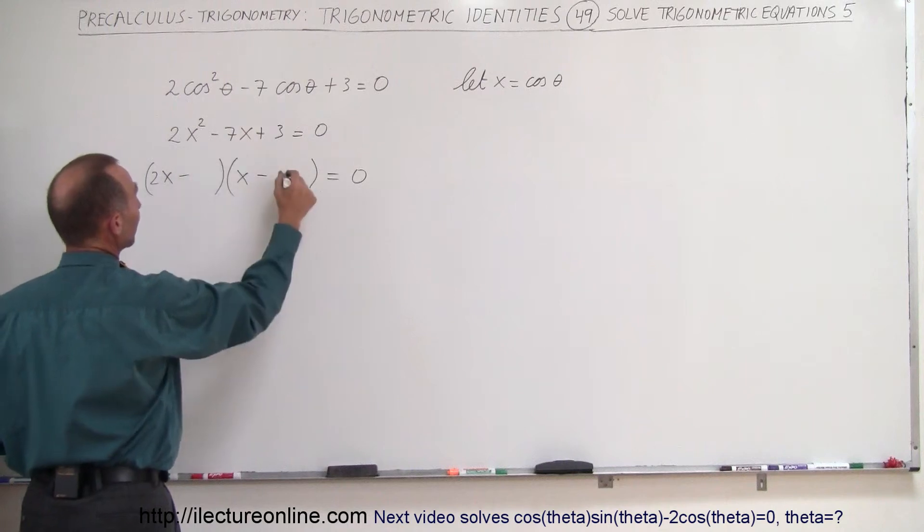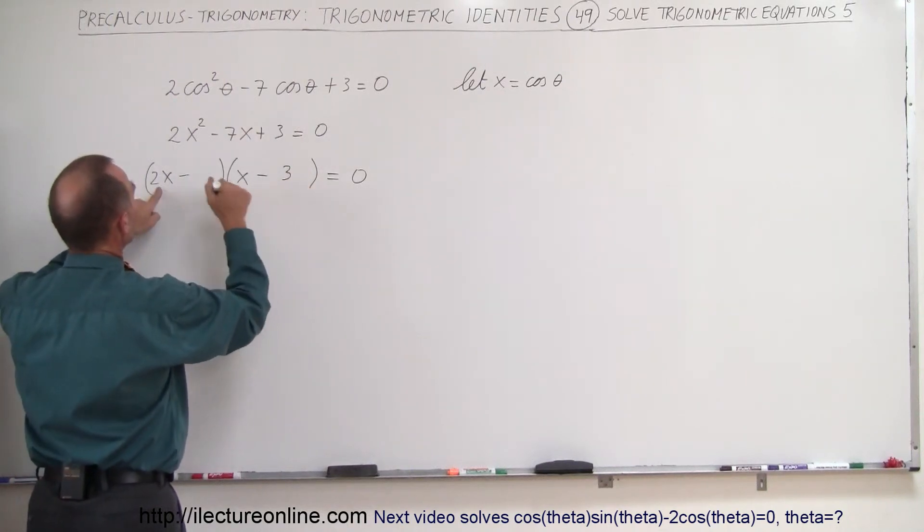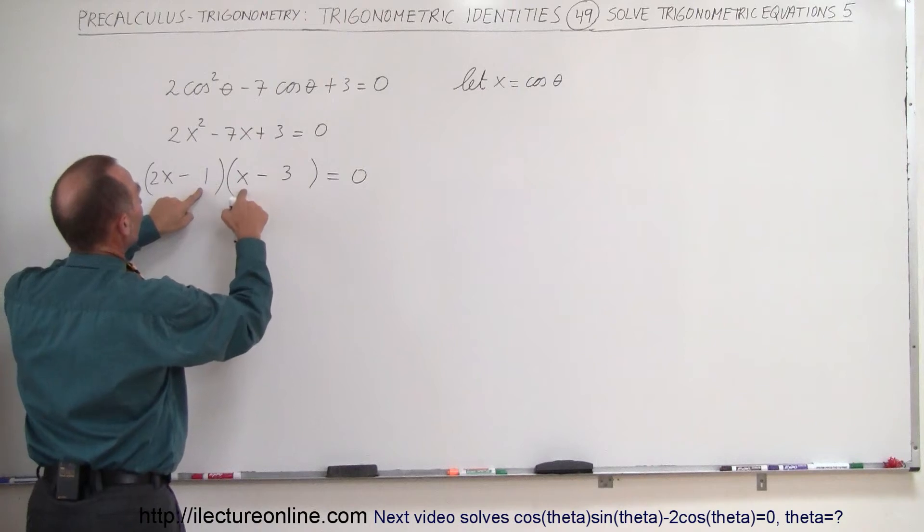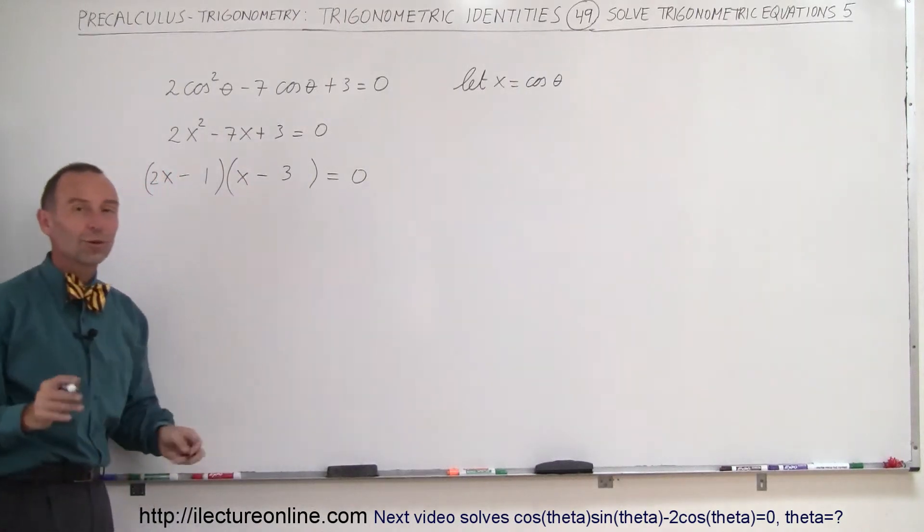And since we need a 7 here, that means we need the 3 over there, because 2 times 3 is 6, and we need the 1 over there. 1 times 1 is 1, 6 plus 1 is 7, so that looks correct.